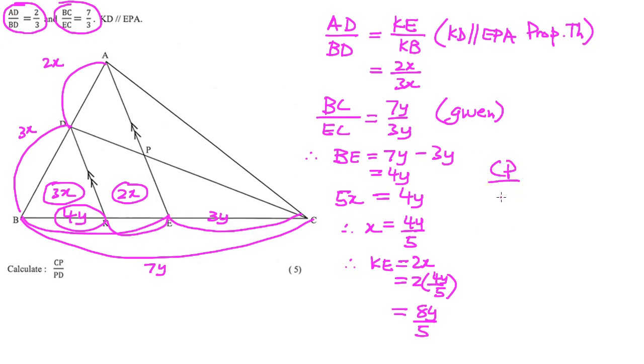At this stage now, we are going to write our final answer: CP over PD is equal to CE over KE, and that is because KD is parallel to EPA. Once again, we can write the proportion theorem or line parallel to third side of triangle.